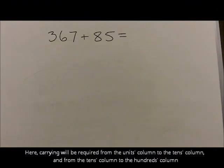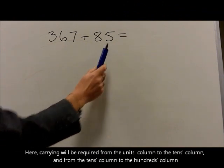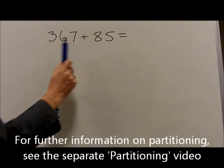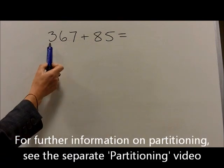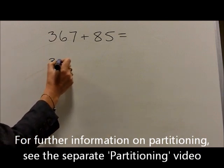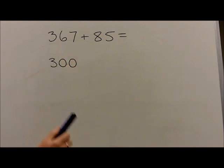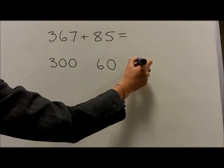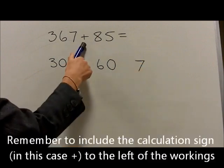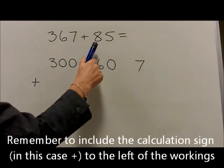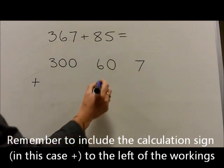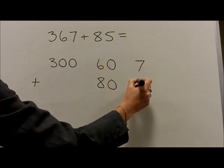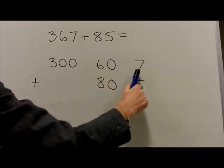With the question 367 plus 85, we partition the 367 into the 100s, 10s and units. So we start with 300, plus the 6 10s, which are 60, and the 7 units, which are 7. We then add this to the 85, which is partitioned as 8 10s, which are 80, written in the 10s column, and 5 units, which are 5, written in the units column.